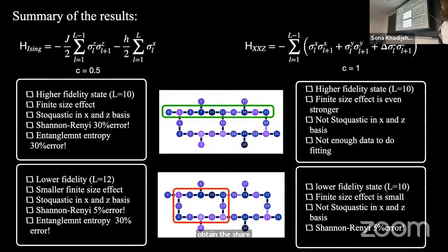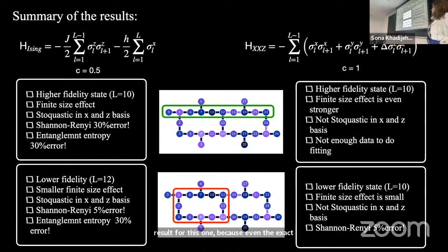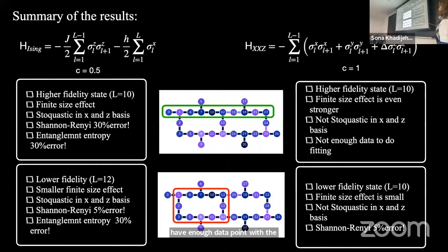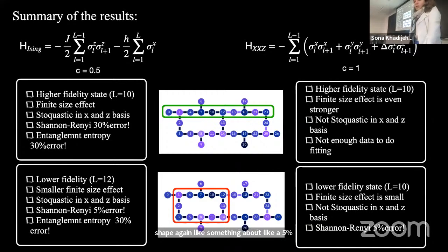In the case of the XXZ model for the open boundary condition, the finite-size effects are even worse, so I am not reporting results for that case, because even exact diagonalization for a spin chain of 10 is unreliable due to oscillations in the XXZ model. We only have about 2 data points after taking even subsystem sizes, which is not enough for a reliable fit. But for the periodic boundary condition we again achieve about 5% error in the central charge.